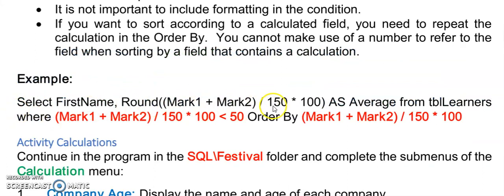I can also add a WHERE, and this is a WHERE using my calculation. I can't use average in my WHERE. If I wanted to have a condition on this calculation, I need to repeat this calculation in my WHERE, then add my operator and then my value that I want to compare this answer to. It's not important to have the formatting here for your calculation.